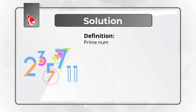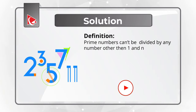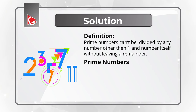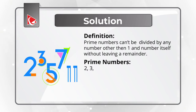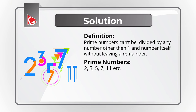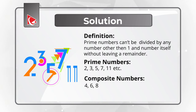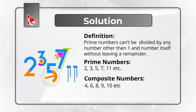To solve this challenge, let's start with the definition of a prime number. Prime numbers cannot be divided by any number other than one and the number itself without leaving a remainder. Some examples of prime numbers would be 2, 3, 5, 7, 11, and you can continue the chain. The opposite of prime numbers are composite numbers — for example, 4 can be divided by 2; 6 by 2 and 3; 8 by 2 and 4; and 9 and 10 continue the sequence.